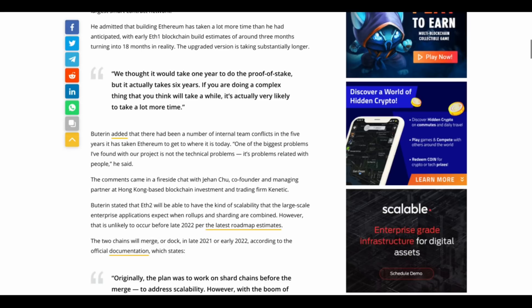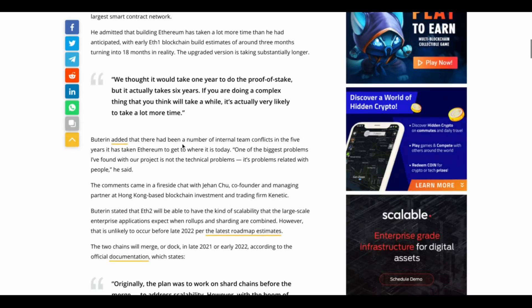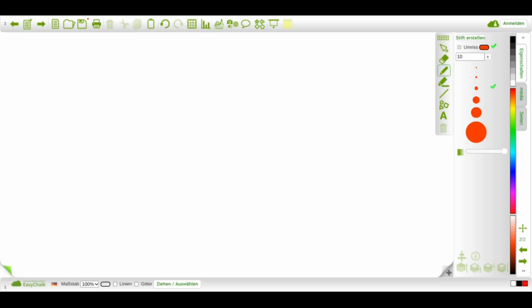So how did they get to this place? Ethereum had such a gigantic lead. And now we've got to this place where this dark horse Cardano is coming out of the shadows and they're going to achieve resolution of the blockchain trilemma. You know, in my opinion, maybe the first real Gen 3 crypto. So they're going to achieve resolution of the trilemma before Ethereum. How did this happen? Buterin added that there had been a number of internal team conflicts in the five years it has taken Ethereum to get to where it is today. One of the biggest problems I've found with our project is not the technical problems. It's problems related with people.